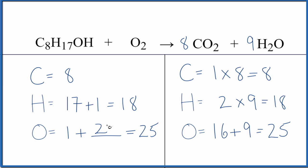So we need 24 more oxygen atoms. That's pretty easy, because we can just put a 12 here. 12 times 2, that gives us 24. The 1 plus the 24, that gives us 25. We're done. This equation is balanced.